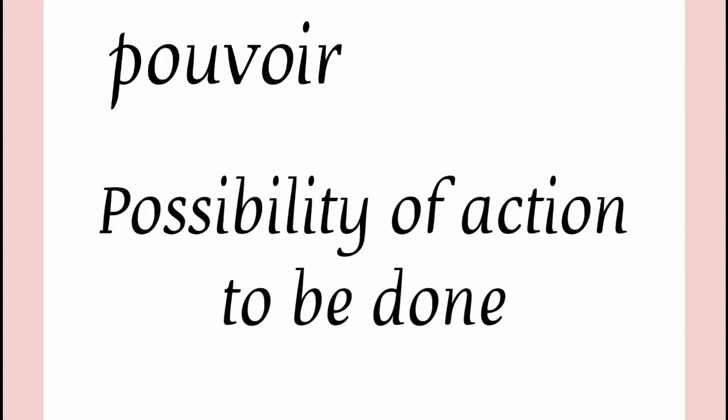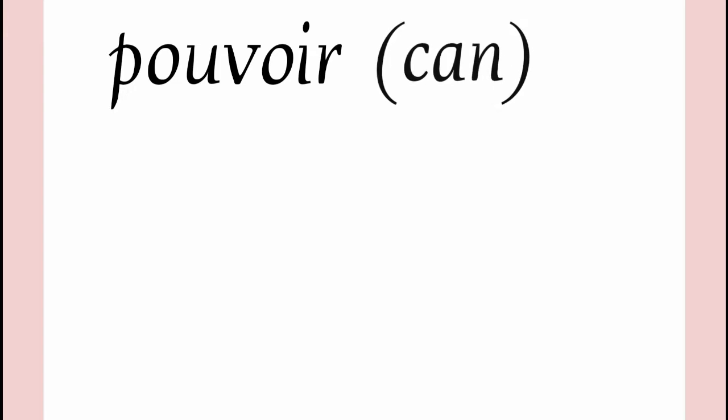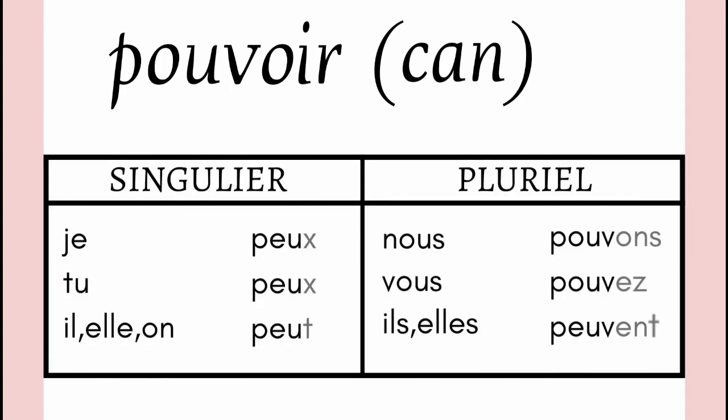The next verb we are going to cover is POUVOIR. POUVOIR is a verb which is really used in a lot of sentences because it shows the possibility of an action to be done. That means in English we can translate it as CAN — I can, you can, he/she can, etc. So this verb is really used and we must know how it is conjugated.